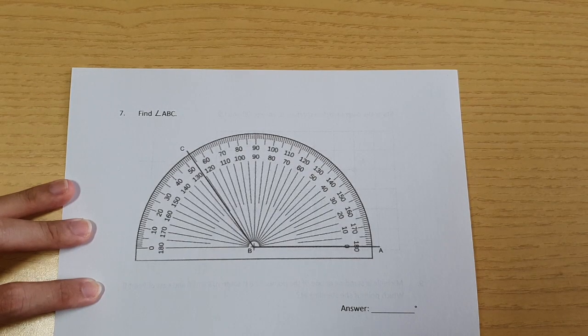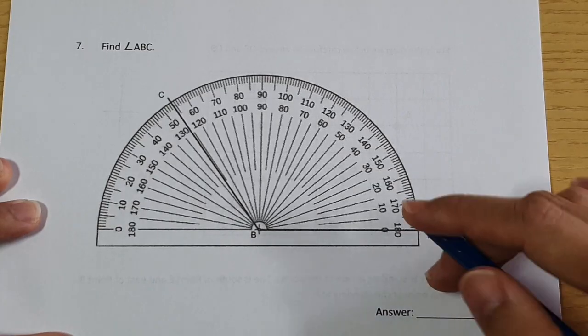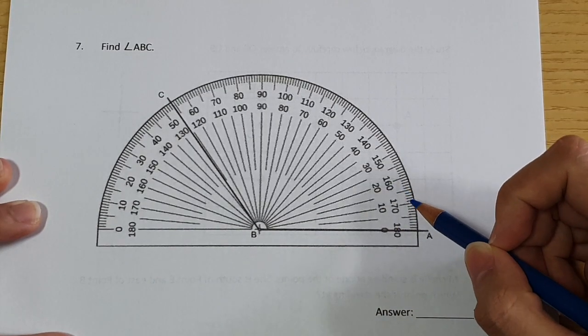Question 7 is a measurement question. I'll give you some time to pause the video here and try the question first. So on this question, the protractor has already been drawn for you.